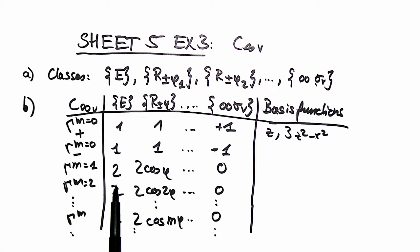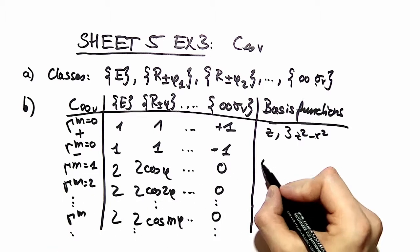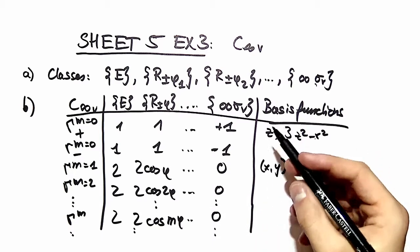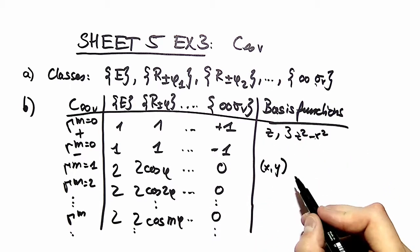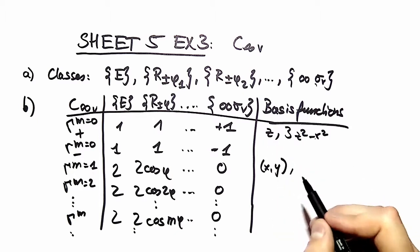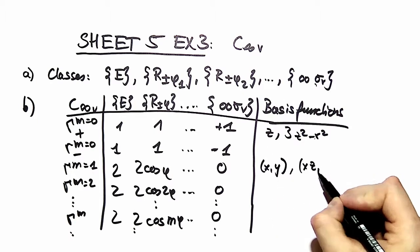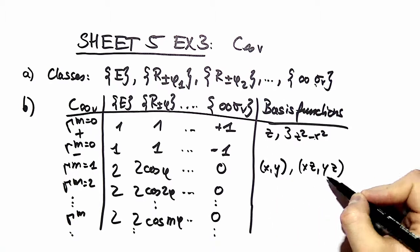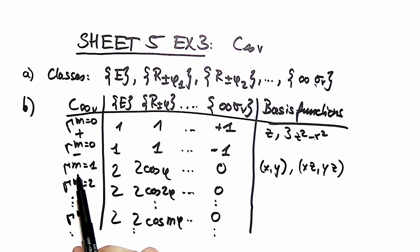Now we think about what vector transforms according to a simple rotation. Well, this is obviously true for an arbitrary vector x, y. By the same argument we used above, x times z and y times z should transform according to gamma m equal to one as well, because again z is left invariant.